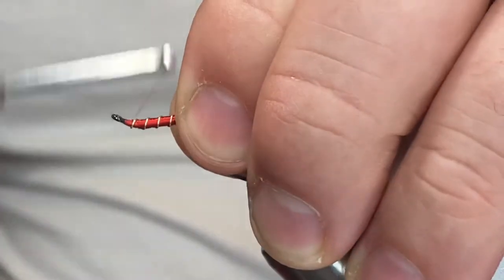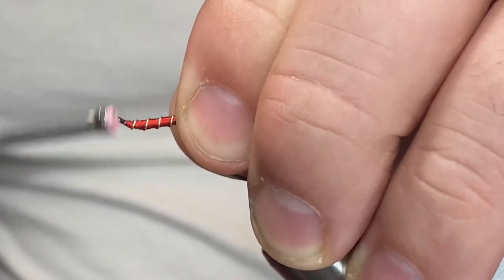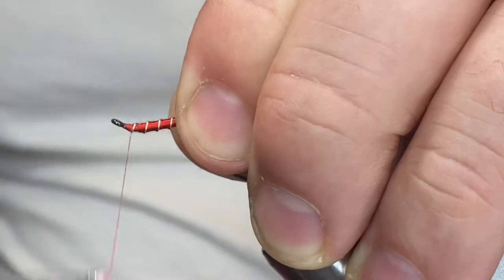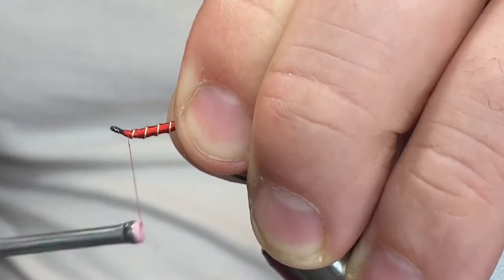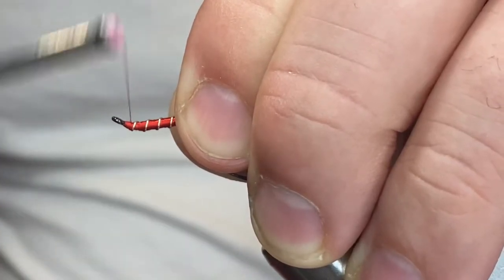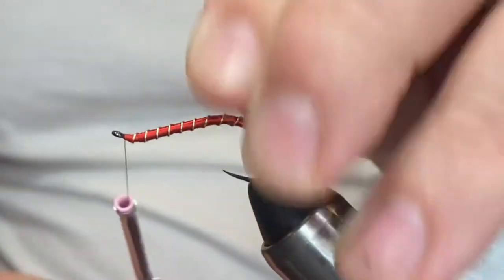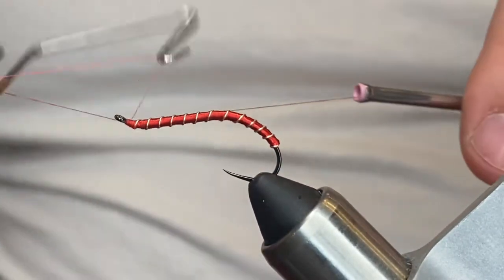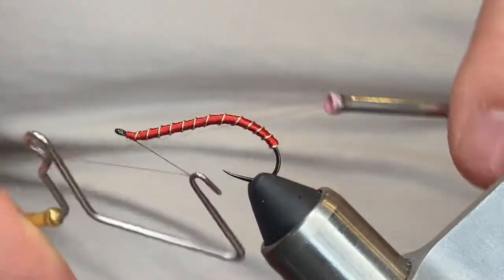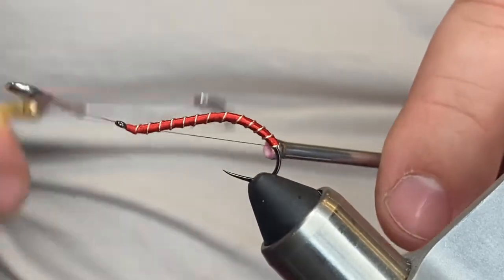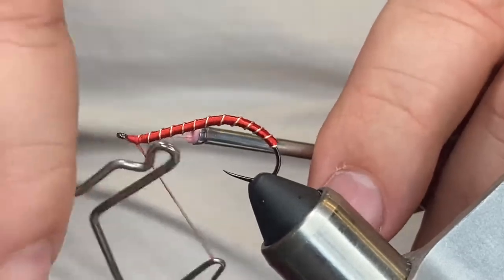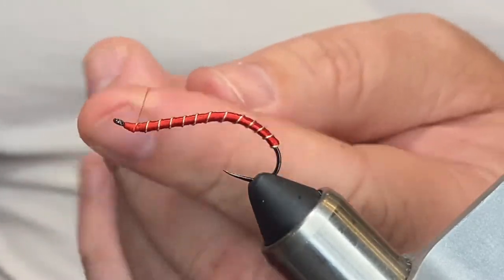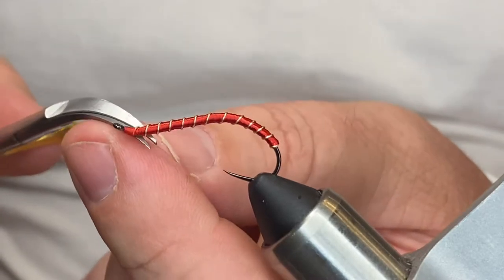Run your bobbin up, helicopter that wire out for a nice clean break. Now we're going to counter-wrap our thread. Let your thread open up so we can cover that tag end of that wire. There we go. Come out with a whip finish. One more to be safe.